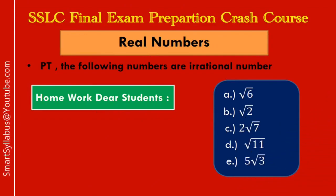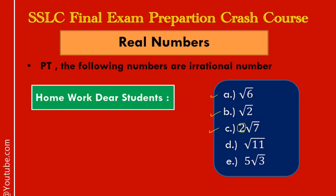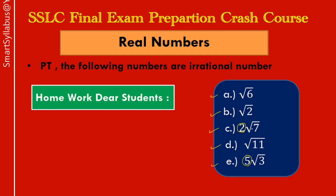Now it's homework time. There are five sums for homework: prove that root 6, root 2, and root 7 are irrational — these are pure monomials. There are also sums with coefficients — use the easier method for those. Practice all these sums and get yourself ready for the final examination.